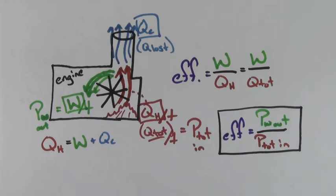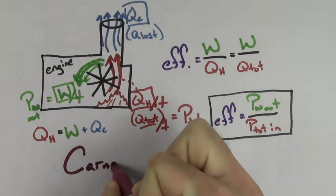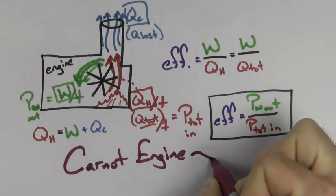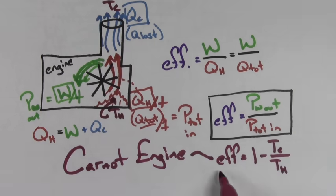It turns out the most efficient heat engine you can make is called a Carnot engine. For a Carnot engine, the efficiency only depends on the temperature of the region where the heat is getting wasted, compared to the temperature of the region where the heat is coming from. The efficiency of a Carnot engine is given by 1 minus TC over TH.